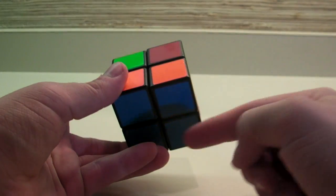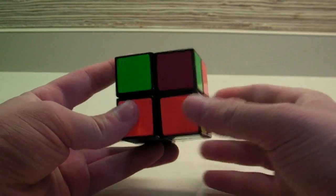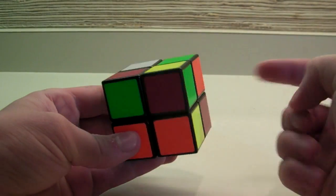Now, for my second step, I'm going to be using the opposite of blue, which is green, and again, I have the anti-sune case.